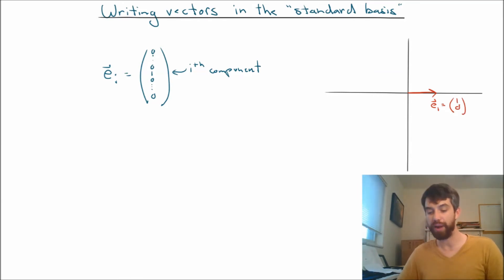not up at all in the y direction. And then e2 is the opposite in a sense. It's the vector sticking straight up. This is the vector that has no x component but one in the y component.